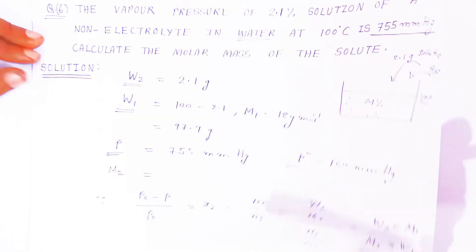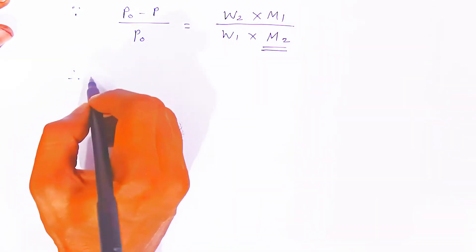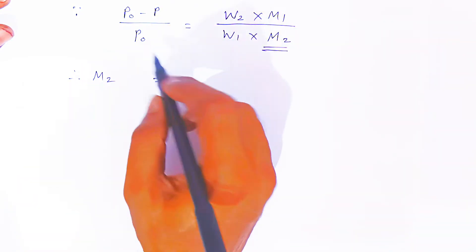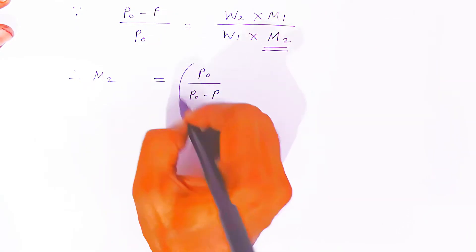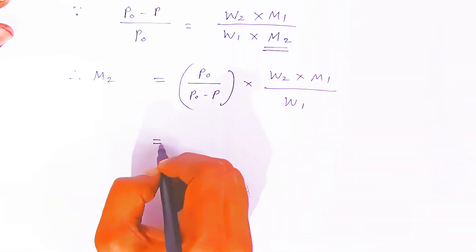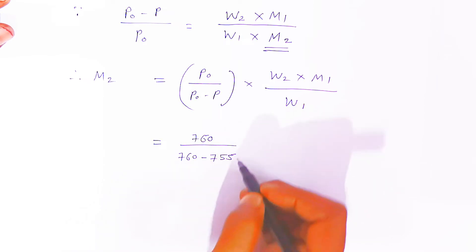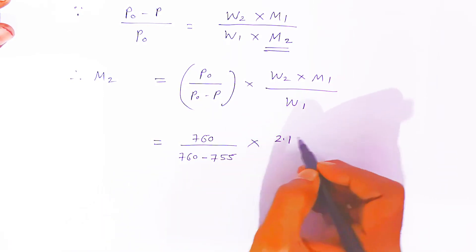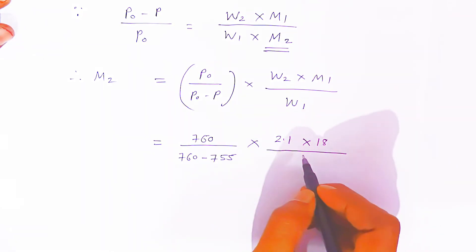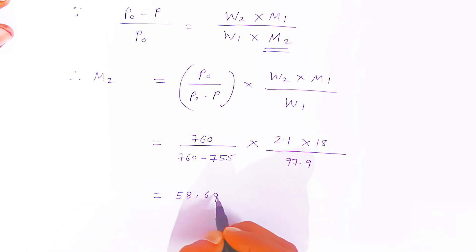Now we calculate M2. Rearranging the formula by cross multiplication: M2 = (P0 / (P0 − P)) × (W2 × M1) / W1. Substituting values: P0 = 760, P0 − P = 760 − 755 = 5, W2 = 2.1, M1 = 18, W1 = 97.9. Using a log table to calculate, M2 = 58.69 grams per mole.